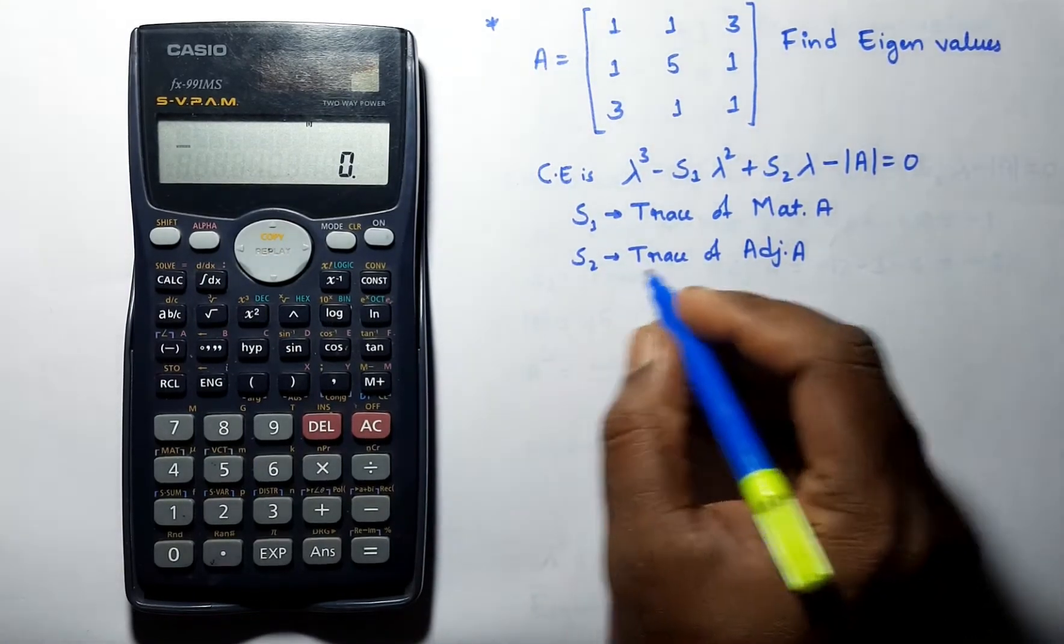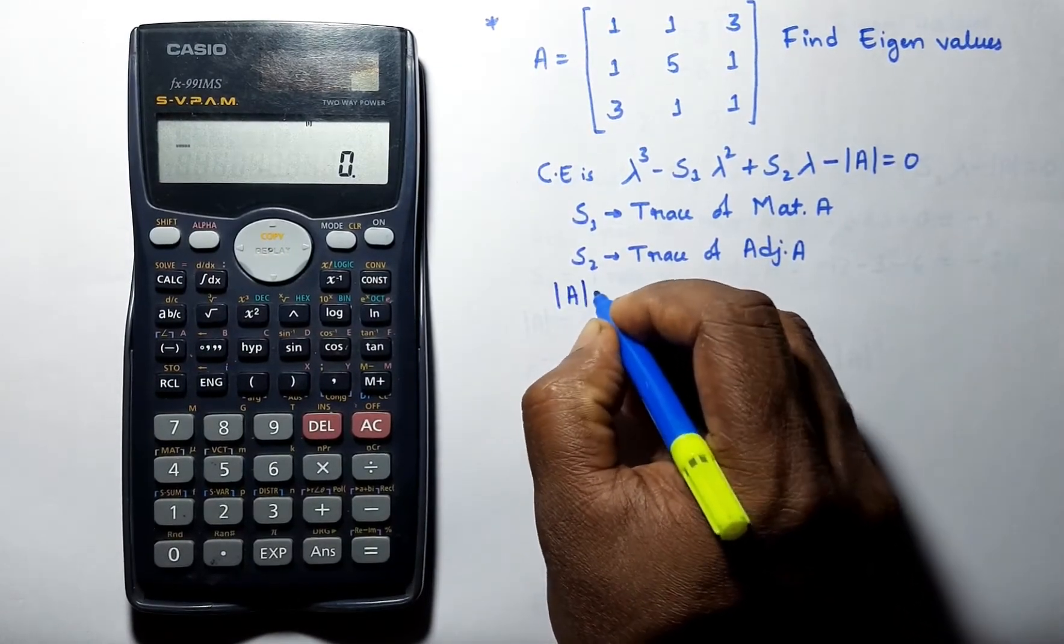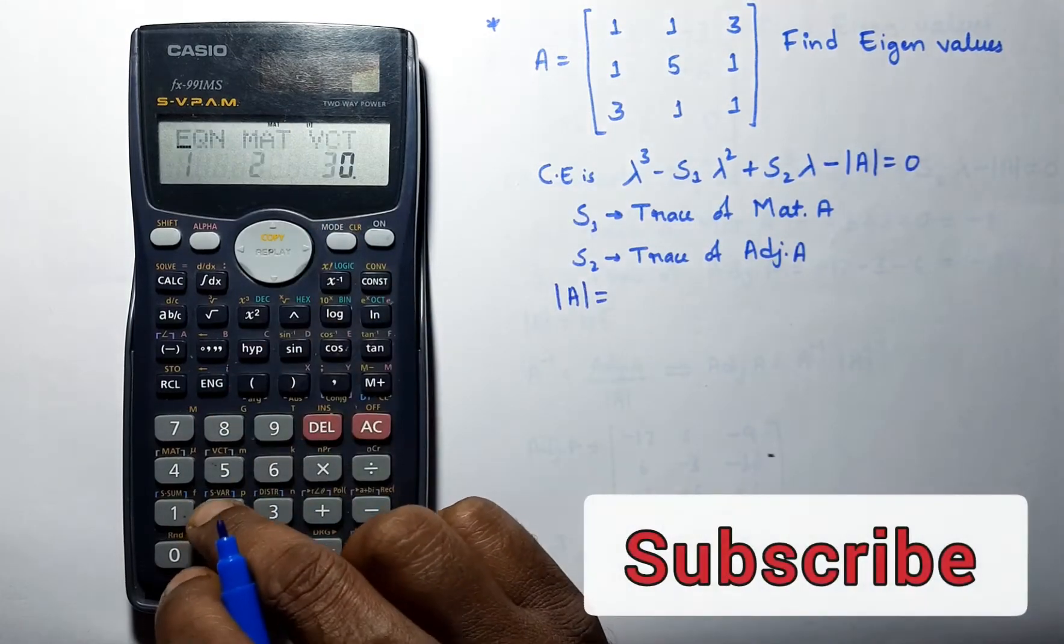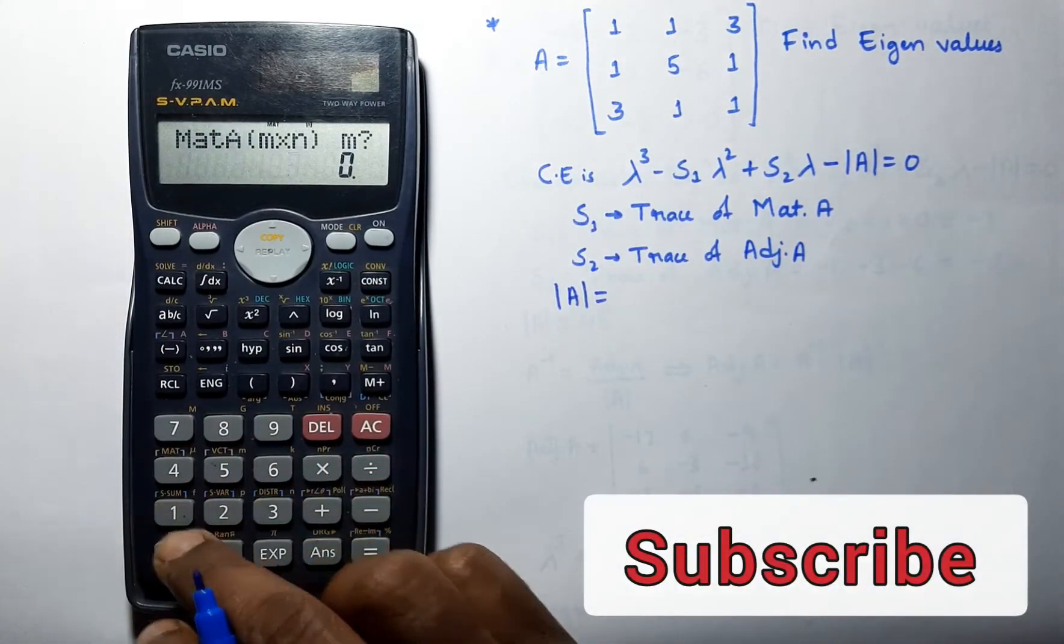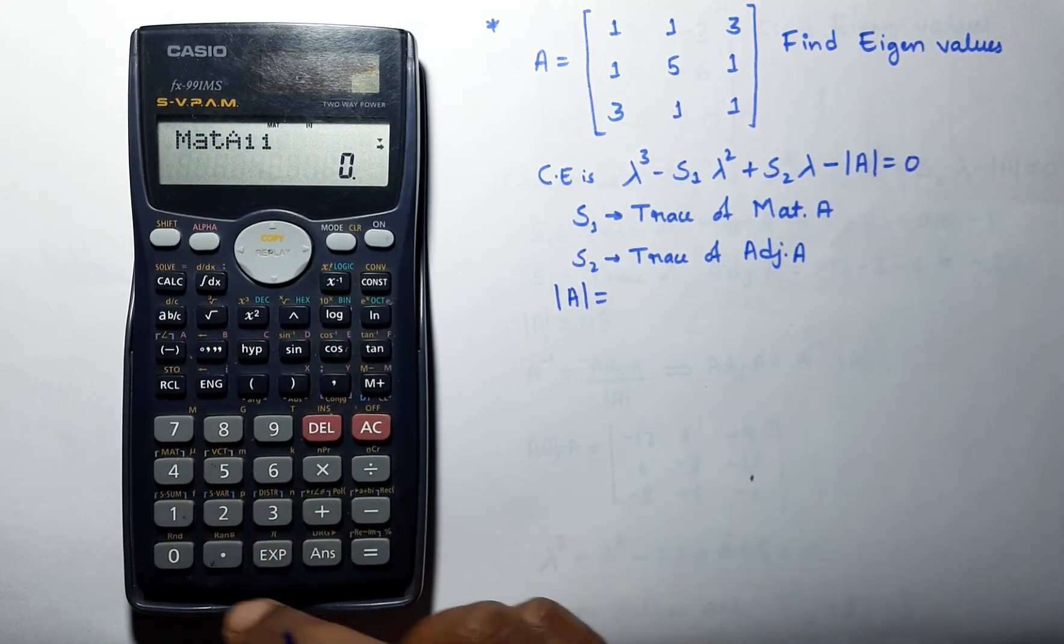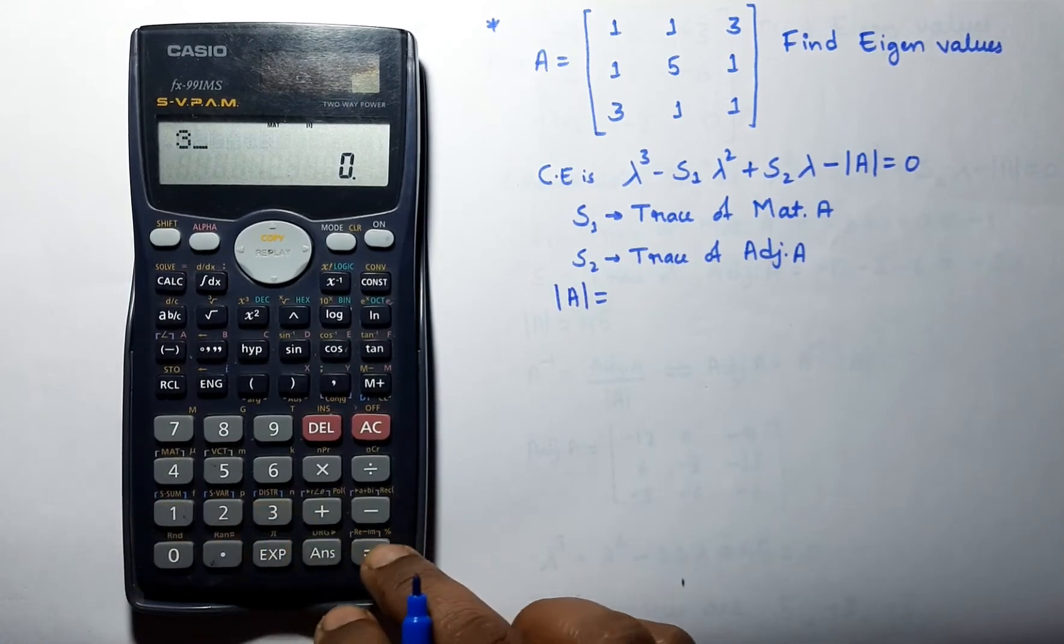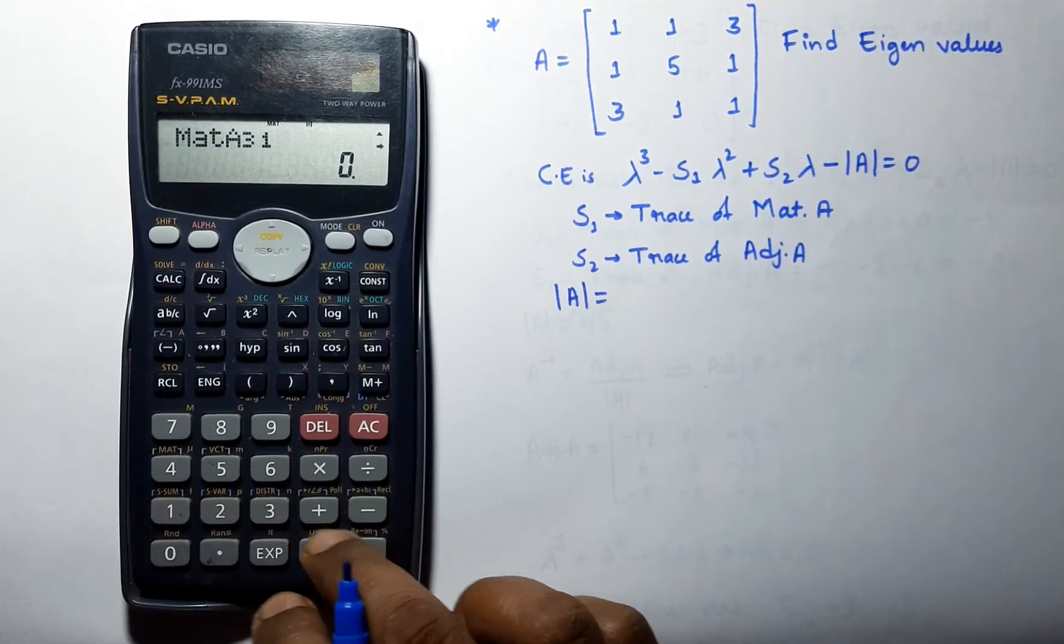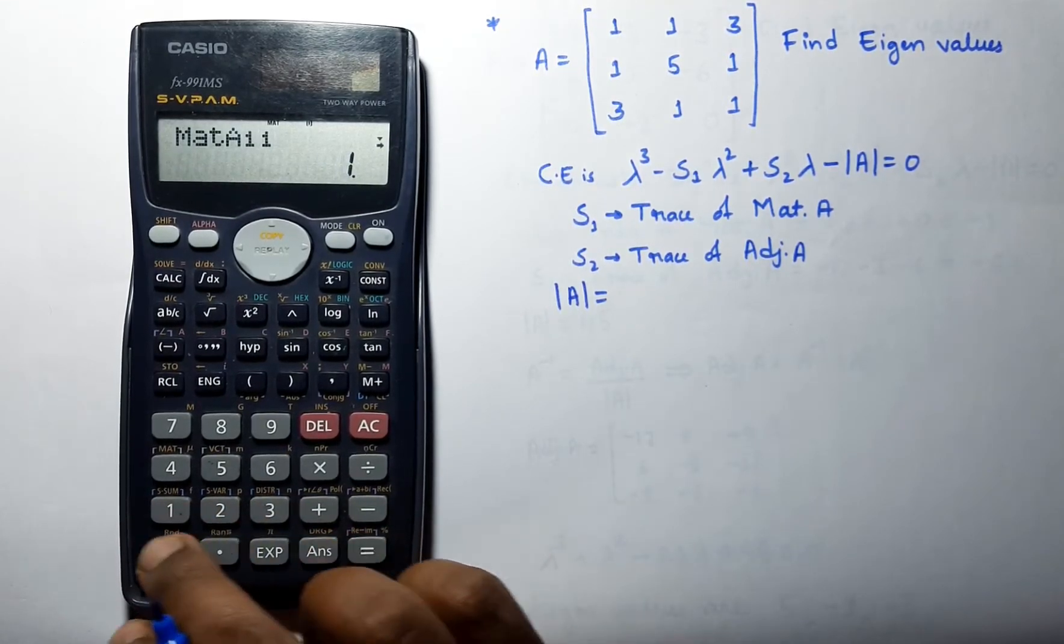Now we will find out the determinant of matrix A. We will set our calculator into matrix mode, then go to dimension, select A. Order of matrix is 3 cross 3. Enter the values: 1, 1, 3; 1, 5, 1; 3, 1, and 1.